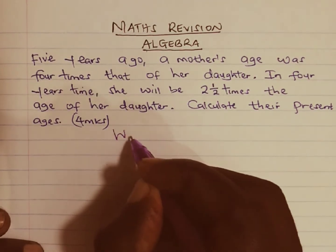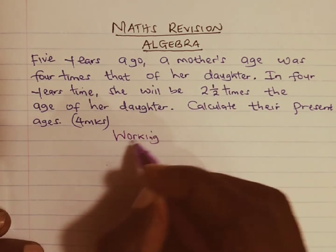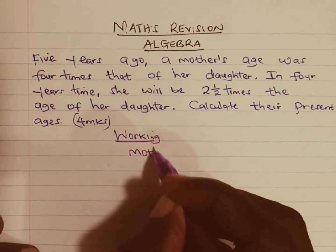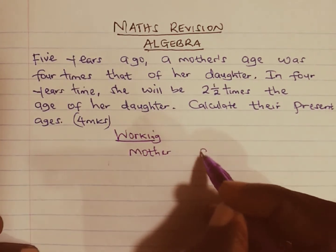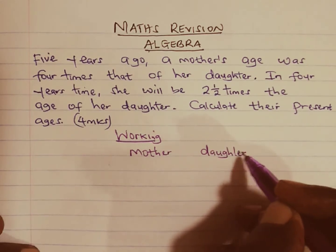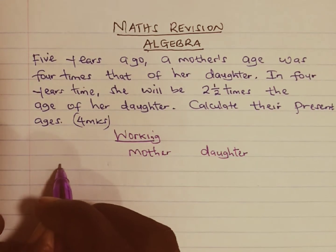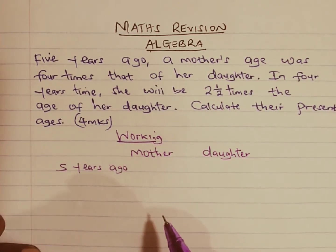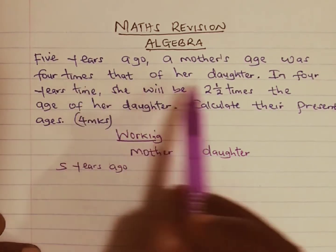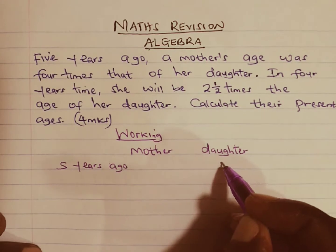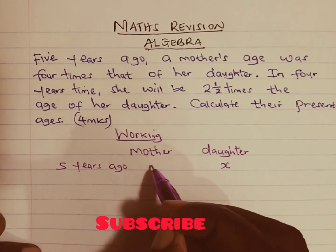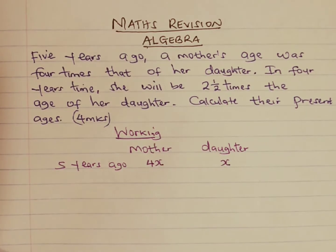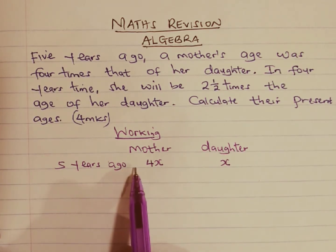So let us look at the working to this question. We know we have the mother and we also have the daughter. We are told five years ago, the mother's age was four times that of her daughter. So if we let the daughter's age be X, then five years ago the age of the mother was four times the age of the daughter, which is 4X. These are their ages five years ago.